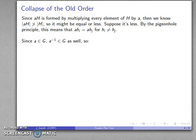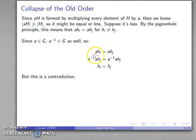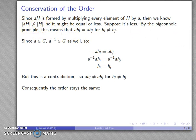Since a is in a group, a inverse is also in the group. So if aH_i = aH_j, I can multiply on the left by the inverse of a and the terms drop out, leaving H_i = H_j on both sides. But I assumed they weren't equal — that's a contradiction. So aH_i and aH_j have to be different for all values, which tells me these two sets must have the same size. The order of the coset must equal the order of the original subgroup.